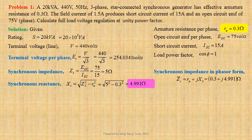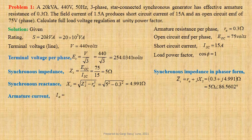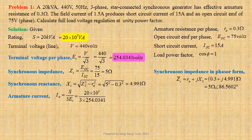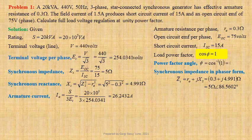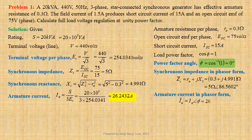This may be written in polar form as 5 ohm at an angle 86.5602 degrees. Let us now determine armature current: Ia equals S divided by 3 times ET. Using values we get 20 × 10³ divided by 3 × 254.0341, giving 26.2432 ampere. Power factor angle φ equals cos inverse of 1, that is 0.0 degrees. Armature current in phasor form: Ia equals 26.2432 ampere at an angle 0.0 degree.